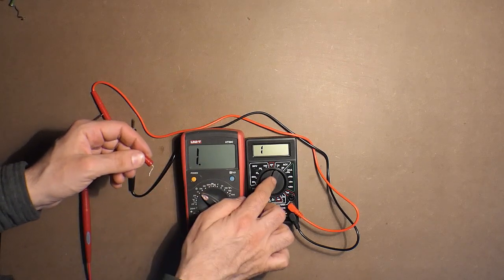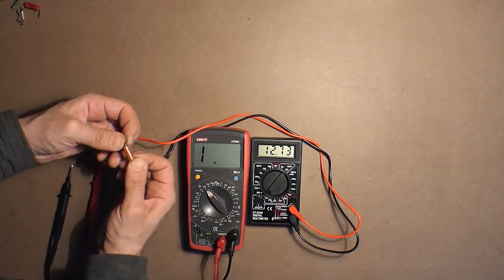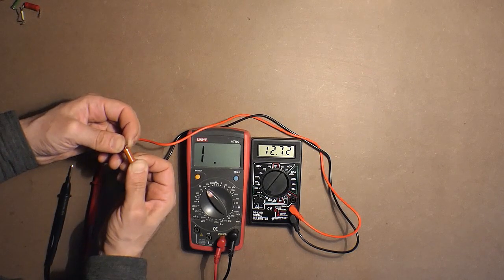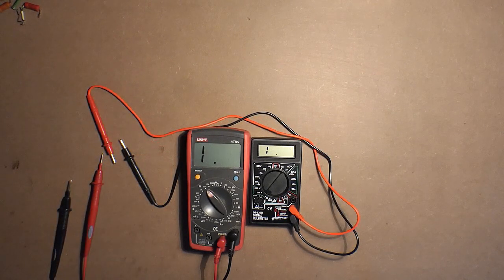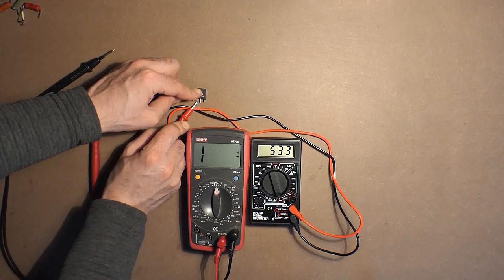So this device is more precise. Here we have 12.82, 12.72. Let's also test diode checking: 516, 533.